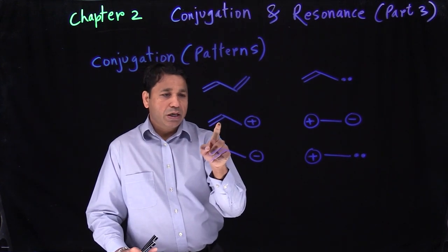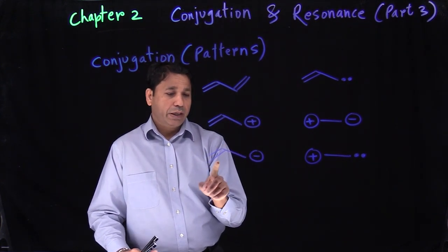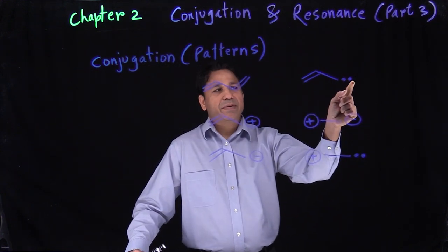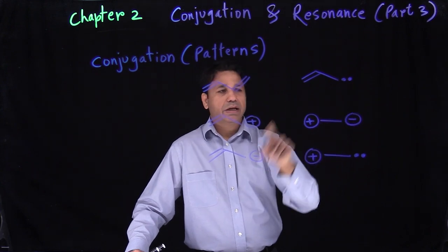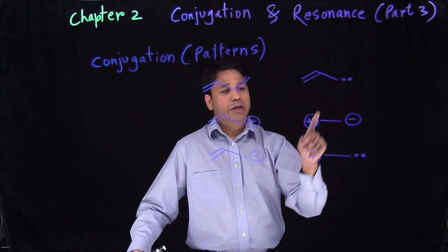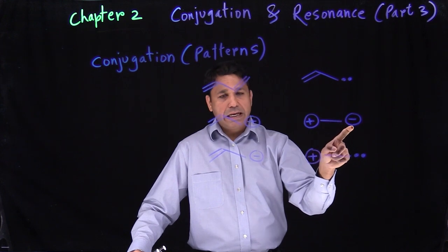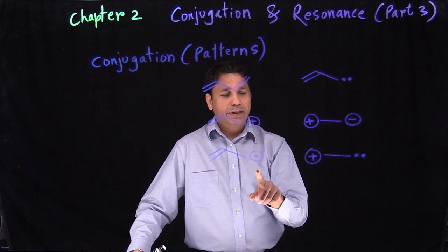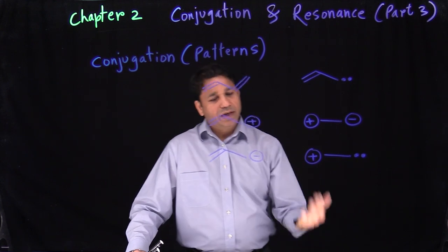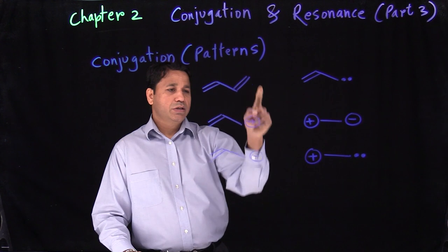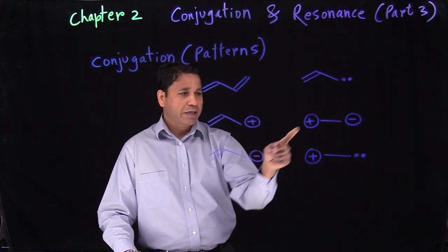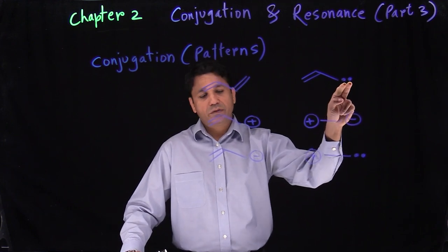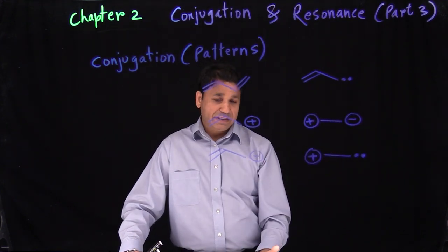Or you might have a double bond, single bond with a plus charge. Double bond, single bond with a negative charge. A negative charge is basically the same as an electron pair. So you can have double, single, electron pair. Or positive, single, negative — or positive, single, electron pair. So these two are pretty much the same, and these two are pretty much the same.